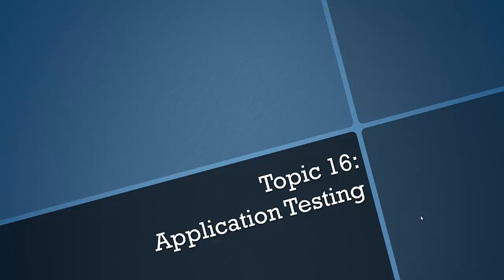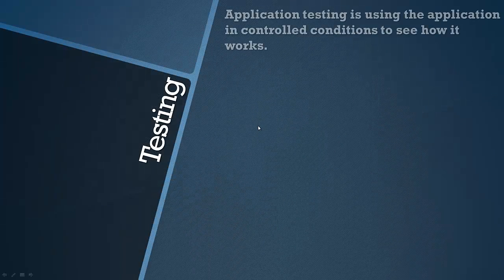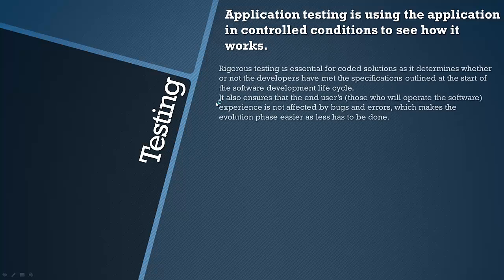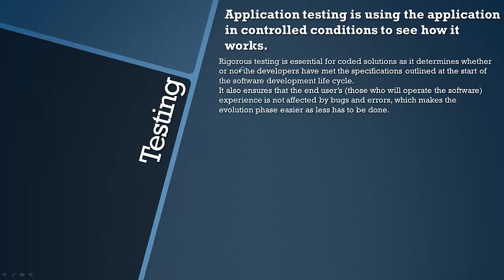I'll be mentioning terms to do with that video, so if they're confusing make sure you check that out and it should shed some light on what I'm talking about. So let's have a look at what application testing is. It's using the application that's already been developed in the implementation stage — again that's a term to do with the lifecycle — using the application in controlled conditions to see how it works. We've got to know why this testing is important and more importantly rigorous testing.